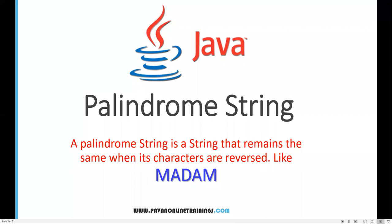Hi everyone, welcome. In this video I am going to show you how to check if a string is a palindrome. A palindrome string is a string that remains the same when its characters are reversed. For example, 'madam' — if you reverse it, you get the same string. This is called a palindrome string.